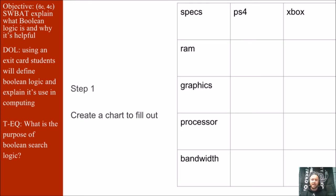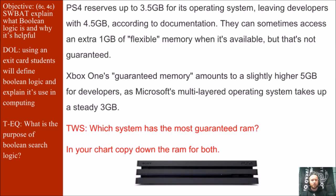Let's create this chart in Canvas — you can use the insert table to create it. We'll talk about RAM, graphics processor, and memory bandwidth. The PS4 reserves up to 3.5 gigabytes for its operating system, leaving developers with 4.5 gigabytes, for a total of 8 gigabytes of RAM — they can sometimes access an extra 1 gig of flexible memory when available, but that's not always guaranteed. For the Xbox, guaranteed memory amounts to slightly higher than 5 gigabytes for developers, as Microsoft's multi-layered operating system takes up a steady 3 gigs. Think-Write-Share: which system has the most guaranteed RAM? Go ahead and fill out those two boxes in your chart — don't forget to put your units of gigabytes.